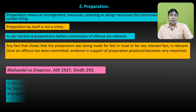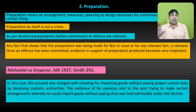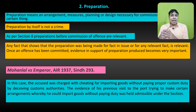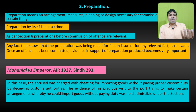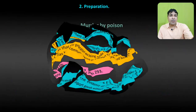Mohanlal versus Emperor. In this case, the accused was charged with cheating for importing goods without paying proper custom duty by deceiving custom authorities. Accused pe charges the ke usne custom authority ko deceive karke, proper custom duty na pay karte huye, kuch cheez import kiya. The evidence of his previous visit to the port, trying to make certain arrangements whereby he could import goods without paying duty, was held admissible under the section. Toh joh preparation ki gayi — woh port visit karke arrangement karna — that becomes relevant under Section 8.